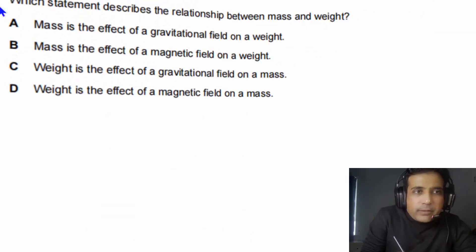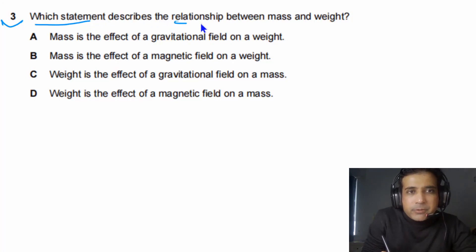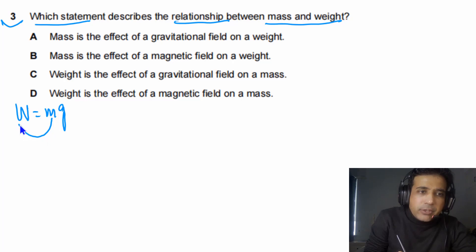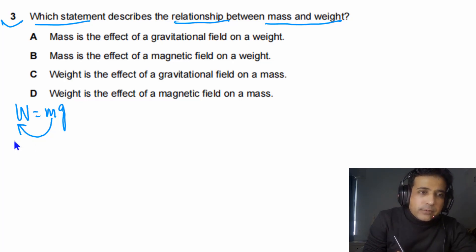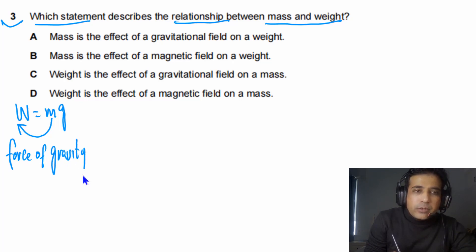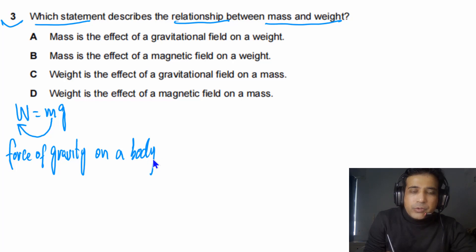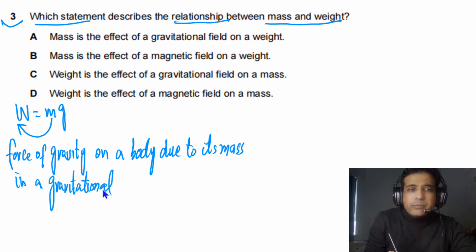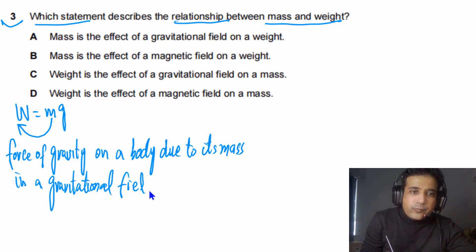For Question 3, we need to find which statement describes the relationship between mass and weight. Weight is equal to mg. Weight is the force of gravity on a body due to its mass in a gravitational field. It is the effect of a gravitational field on a mass.